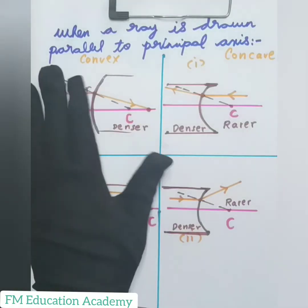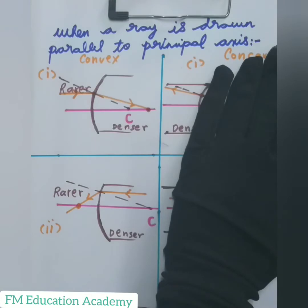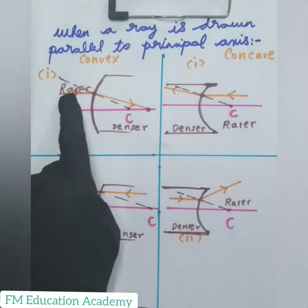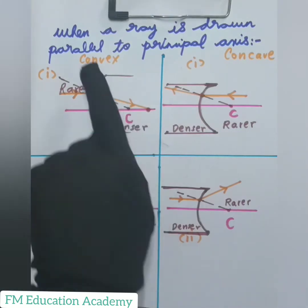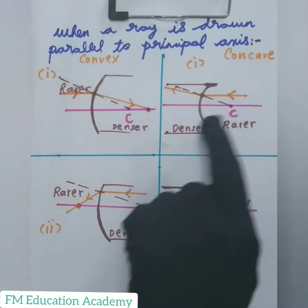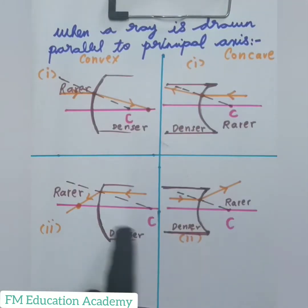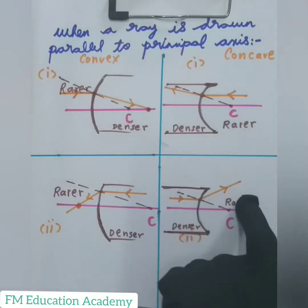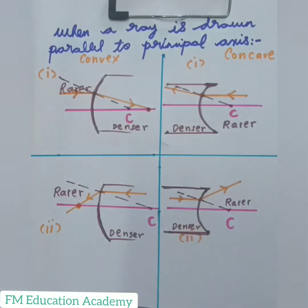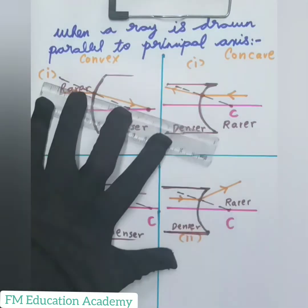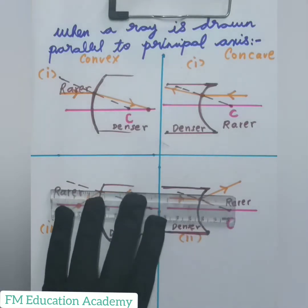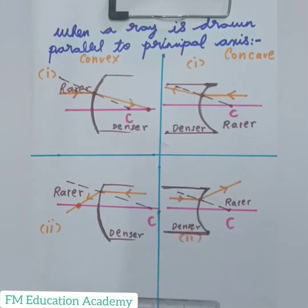These were the four situations for convex surface and concave surface. We drew two diagrams for each: when the ray is parallel to the principal axis traveling from rarer to denser medium for convex, rarer to denser for concave, denser to rarer for convex, and denser to rarer for concave. The basic rule: whenever a ray travels from rarer to denser medium it bends towards the normal, and from denser to rarer it bends away from the normal.